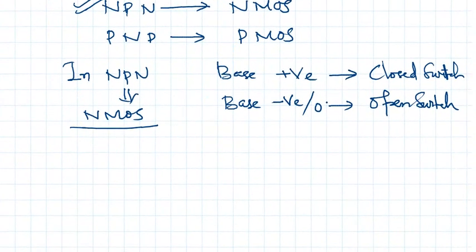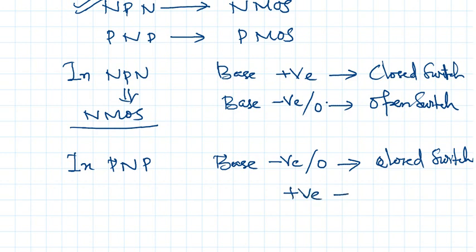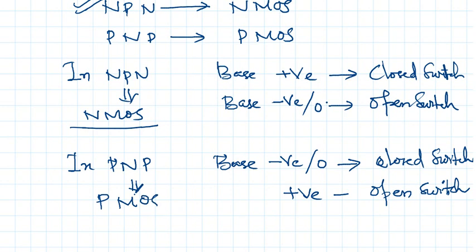In PNP, it is opposite — gate negative or 0 acts as a closed switch. PNP is the same as PMOS. PMOS: gate 0 is closed switch. That circuit is the same as PMOS.